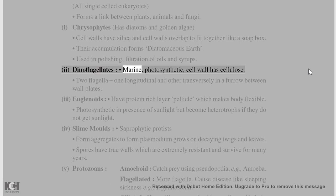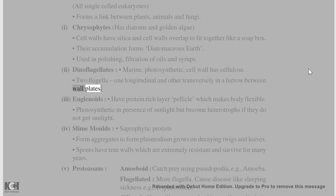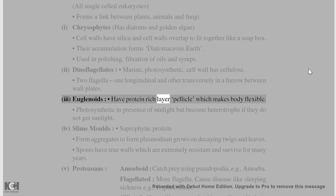Dinoflagellates are marine and photosynthetic. Their cell wall has cellulose and two flagella — one longitudinal and one transverse in a furrow between wall plates. Euglenoids have a protein-rich layer called pellicle which makes the body flexible.